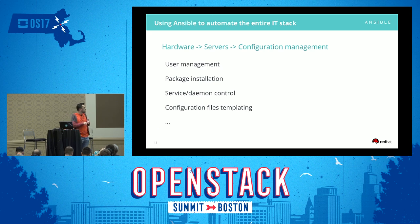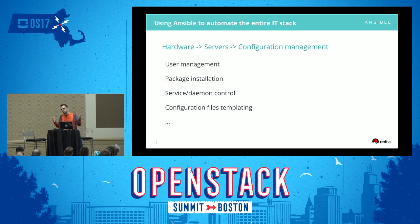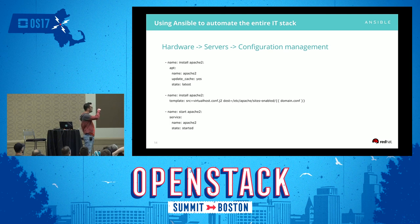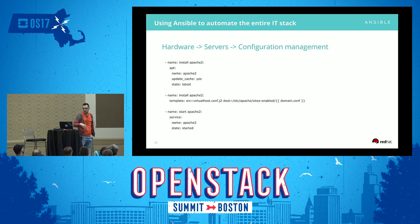For config management, Ansible is known to be a great tool. You can do user management, package installation, service daemon control, and configure files and services. Here's an example playbook: with APT we install the Apache2 package doing an apt-get update — that's what update_cache means. Then we configure the virtual host conf using a Jinja2 template with variables passed to the Ansible playbook. Then we make sure the Apache2 service is started.